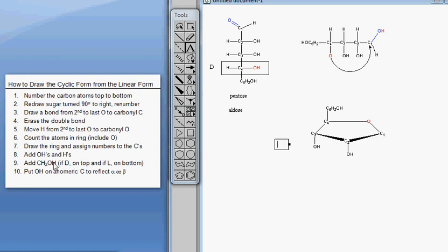We need to put our OH on our anomeric carbon. The anomeric carbon, if you don't remember, is the one that used to be the carbonyl carbon. It's the only carbon in our sugar that has two bonds to oxygen. Again, I'm going to show you both alpha and beta because it's easy to copy and paste.